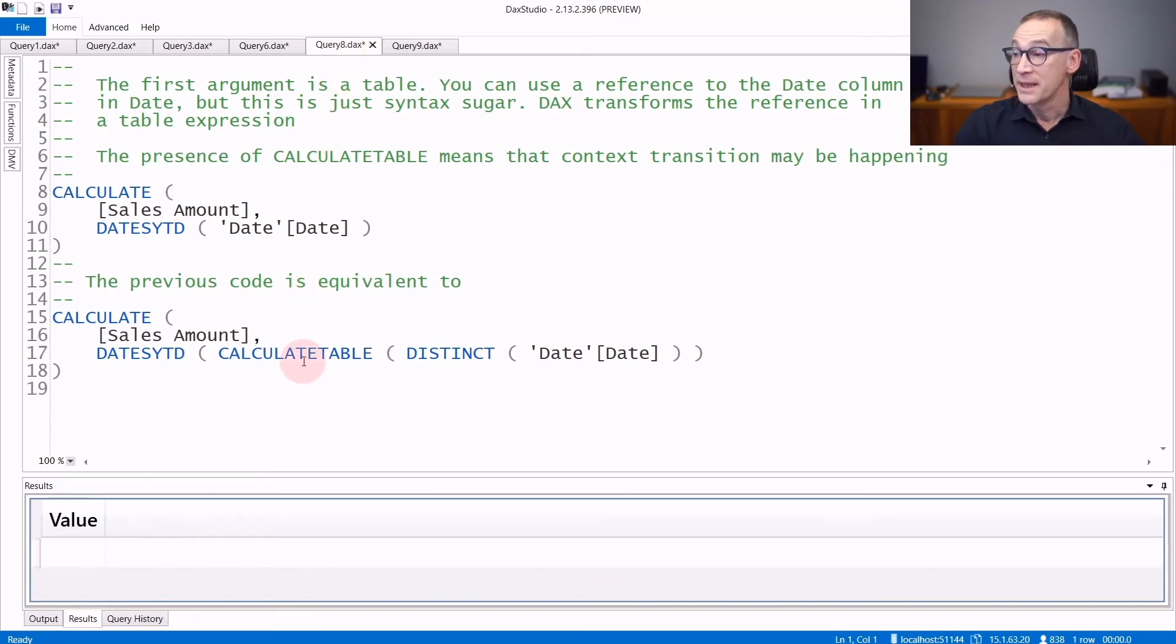And another important detail about all these time intelligence functions, including DatesYTD and the period-to-date functions, is that even though you specify just a column reference in most scenarios, these functions actually require a table as their first argument. And if you just use date date, the engine rewrites your code using CALCULATETABLE DISTINCT date date. This is important because the presence of CALCULATETABLE means that context transition might be happening. If you are running these calculations inside a row context, there might be context transition and you need to pay attention to that.